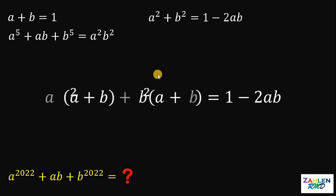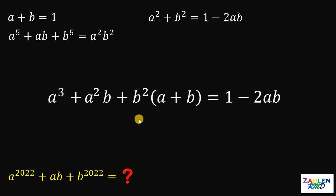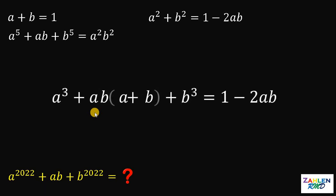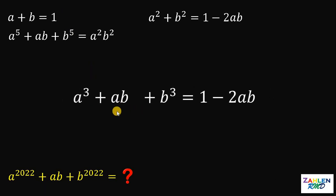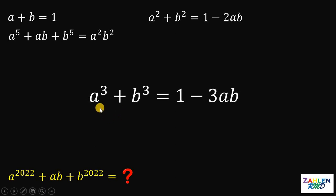Take note that a plus b equals 1, so the right-hand side gives 1 minus 2ab. On the left-hand side, we multiply a plus b by a squared plus b squared using chunk multiplication. The middle terms share a common factor of ab, and since a plus b equals 1, ab times a plus b is just ab. Subtracting ab from both sides gives us a cubed plus b cubed equals 1 minus 3ab.